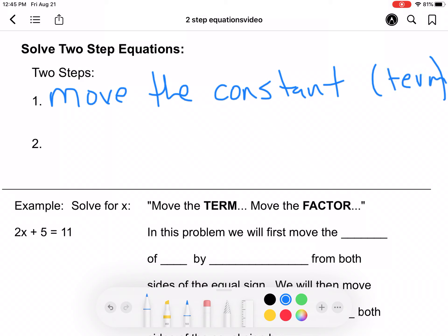And you might also hear that known as the term. And the second thing you want to do is move the coefficient. And that could also be known as the factor. Okay? So those are your two steps. Move the constant. Move the coefficient.